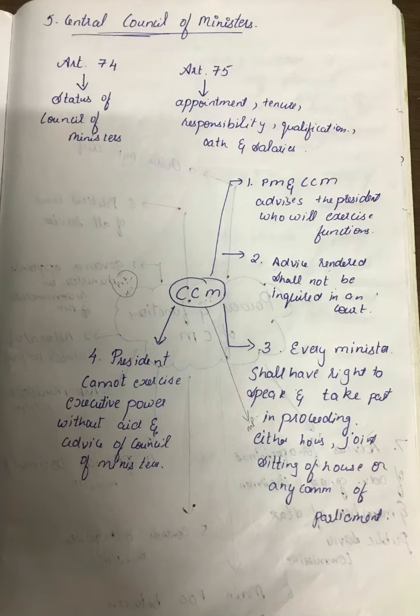The fourth important aspect is that the president cannot exercise executive powers without the aid and advice of the council of ministers. In India, we are not following a dictatorship regime — we are giving voice to the people. The president cannot take any decision without the functionalities and the power of the CCM. These are the four components you need to keep in mind about CCM.